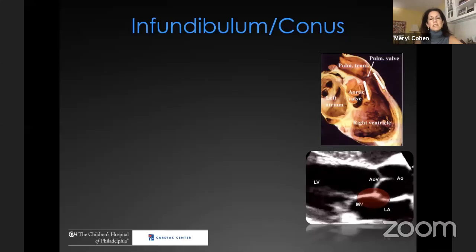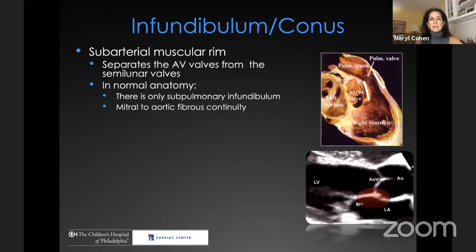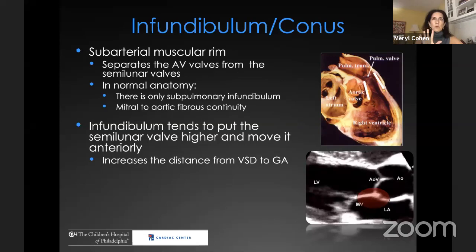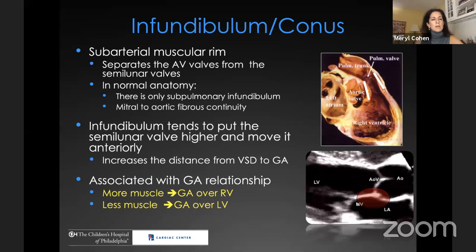A review of the infundibulum or conus — these are interchangeable terms. It is defined as a sub-arterial muscular rim that separates the atrioventricular valves from the semilunar valves. In the normal heart, there is only sub-pulmonary infundibulum, which is why you have mitral-to-aortic fibrous continuity — there is no sub-aortic infundibulum. The infundibulum, that muscular rim, tends to put the semilunar valve higher and more anterior, increases the distance from the VSD to that great artery, and is associated with the great artery relationship — more muscle under a great artery moves it over the right ventricle; less muscle moves it over the left ventricle.